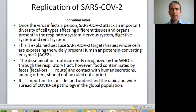At the individual level from the perspective of human beings as a host, once the virus infects a person, SARS-CoV-2 attacks an important diversity of cell types affecting different tissues and organs present in the respiratory system, nervous system, digestive system, and renal system. There's a plethora of systems which are attacked. This is explained because the targets of the virus are tissues whose cells are expressing the widely present human angiotensin-converting enzyme 2, which is ACE2, now famous in studies of the virus.